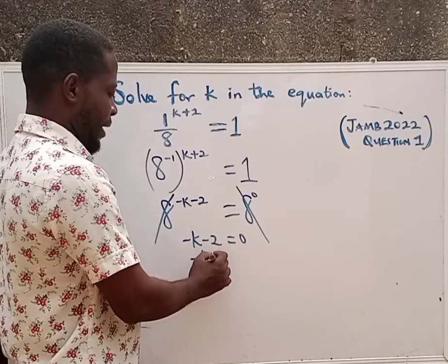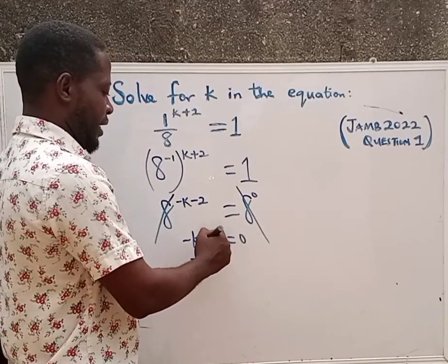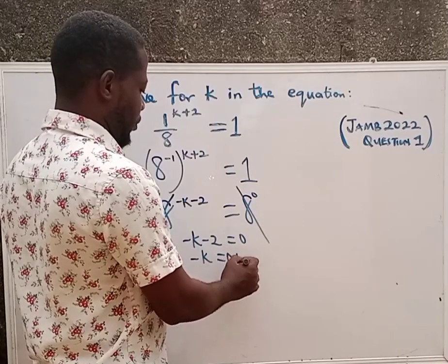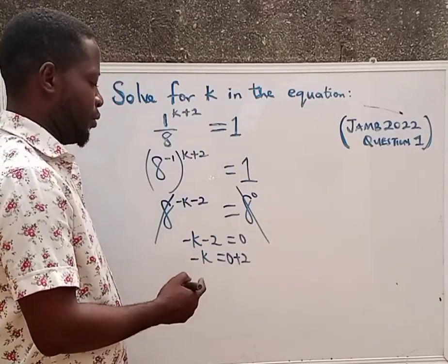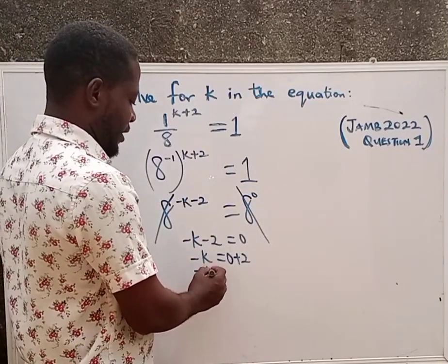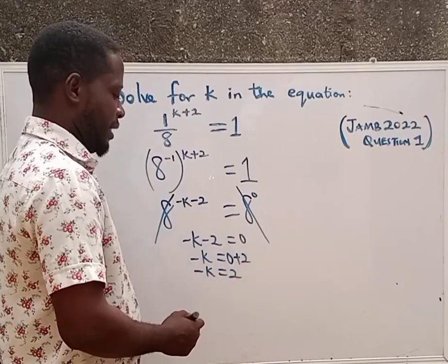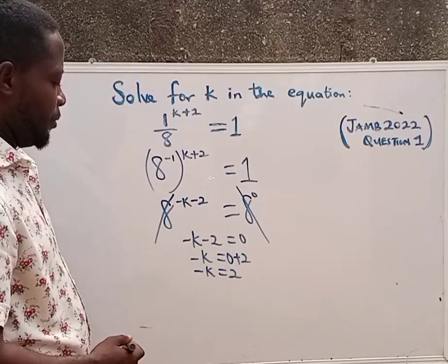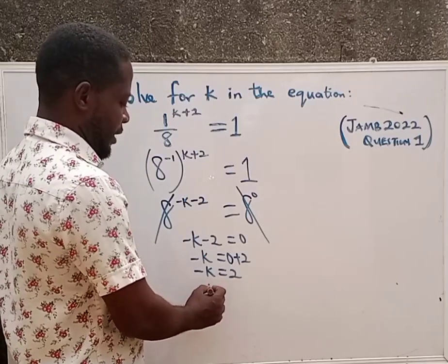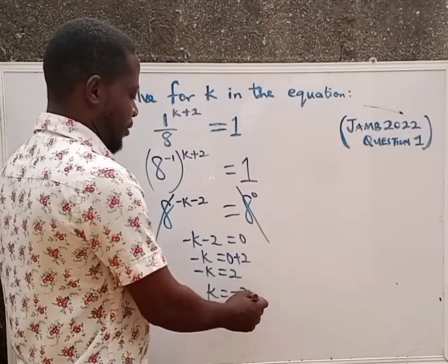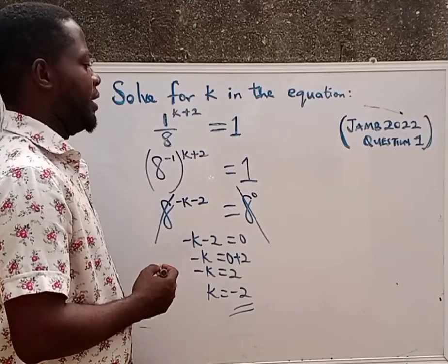Then we have minus k equals to 0 plus 2. When the minus 2 crosses over, we are left with minus k equals to 2. When we divide both sides by minus 1, we get minus 2. So that is our final answer.